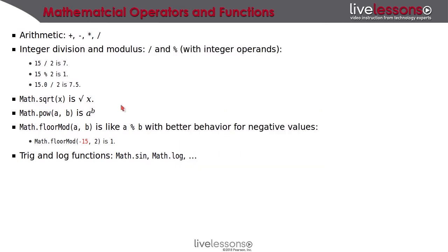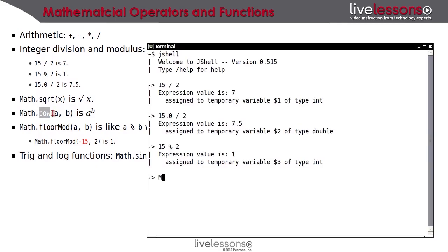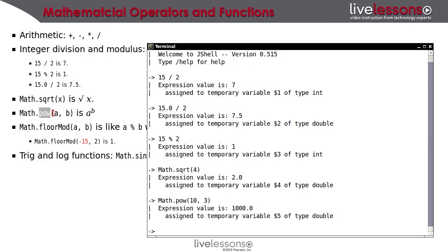To compute roots and powers, you don't use operators in Java. You use functions. Those functions are in the math class, so you have to first put in the name of that class, math, and a period, and then the name of the method. That's sqrt for square root. To compute powers, you similarly use the pow function. Let's just try it out. The square root of 4 is 2, and let's compute 10 raised to the third power, and that's 1,000.